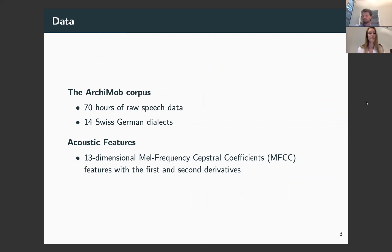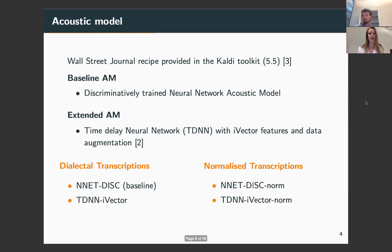The features extracted from the speech signal are 13-dimensional mel-frequency spectral coefficients with the first and second derivatives. For our systems, we used the adapted Wall Street Journal recipe provided in the Kaldi toolkit.